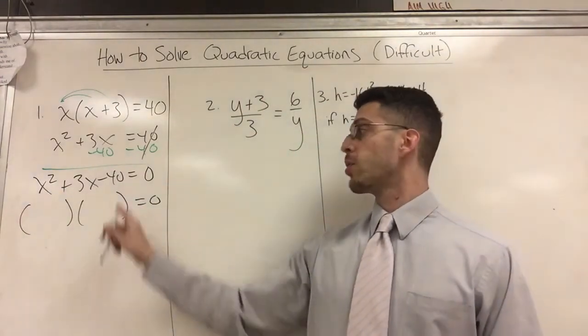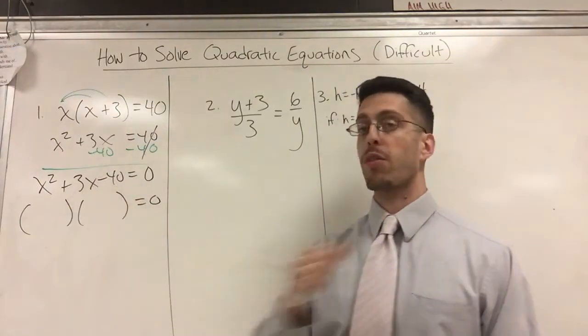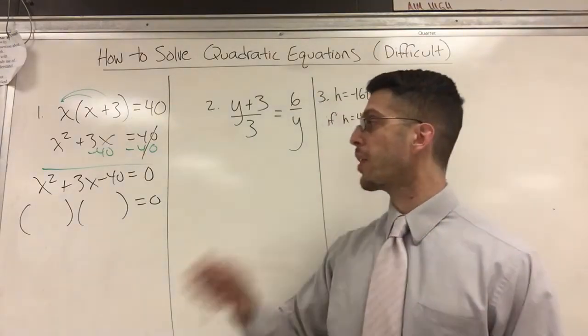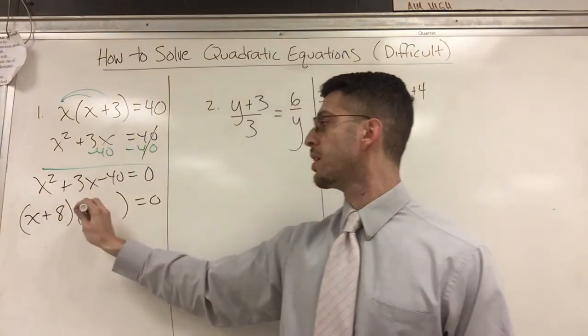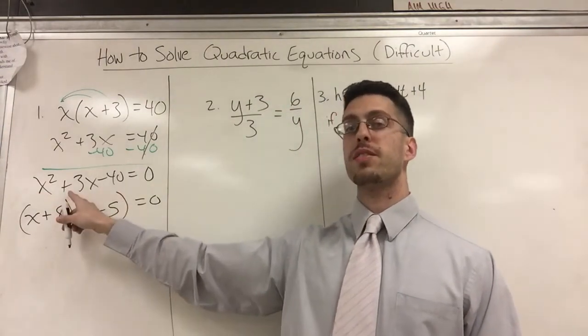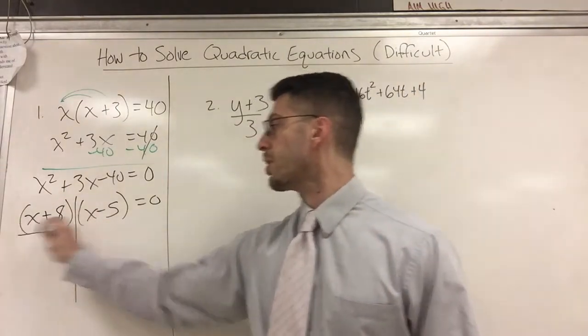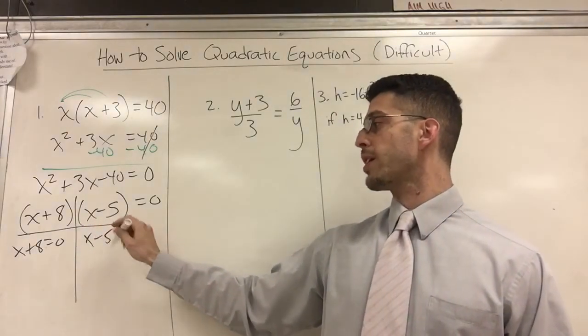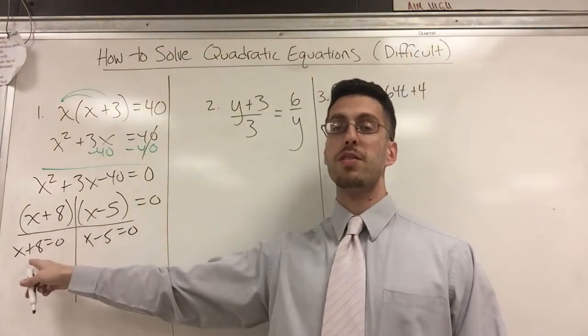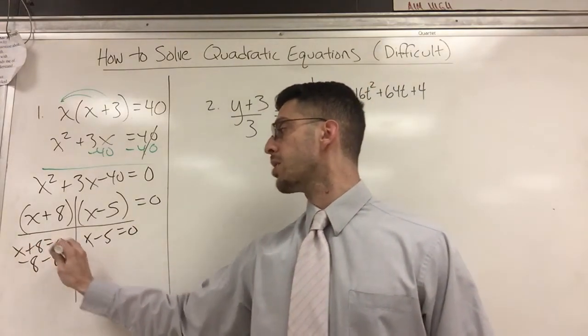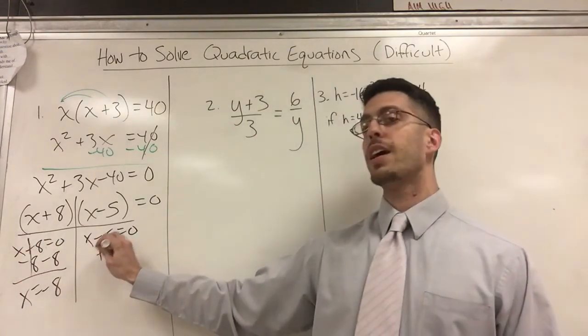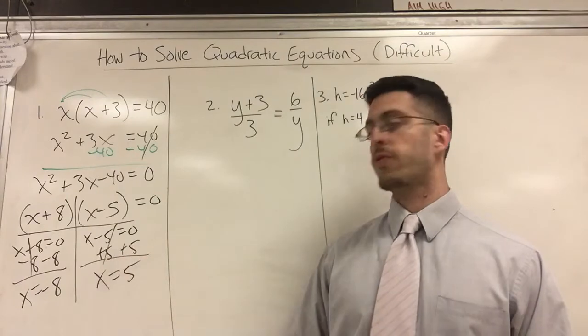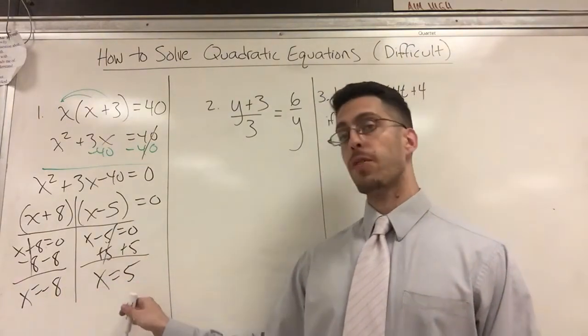This looks like something I can handle using sum product. What times what is negative 40 and also adds to three. Let's see, 20 and two, no. Eight and five or maybe 10 and four. I think it's X plus eight and X minus five. My bigger factor gets the middle sign. So now I do my T chart and X plus eight equals zero or the other one, X minus five equals zero. That's the zero product property. Either this or this equals zero. Here I can subtract eight on both sides and X equals negative eight. Here I add five to both sides of the equation and X equals five, two solutions, one positive, one negative.